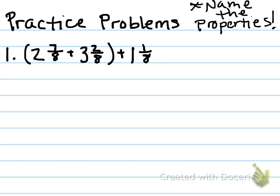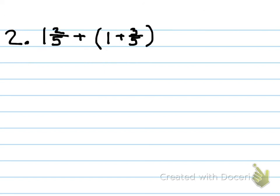So, your practice problems — you have two practice problems. Notice we are asking you to name the properties. When you reorder them, that's commutative. When you regroup them with parentheses, that's associative. Please label them. Here's your first problem, and here's your second problem. Make sure you name the properties as you use them. Have a good night.